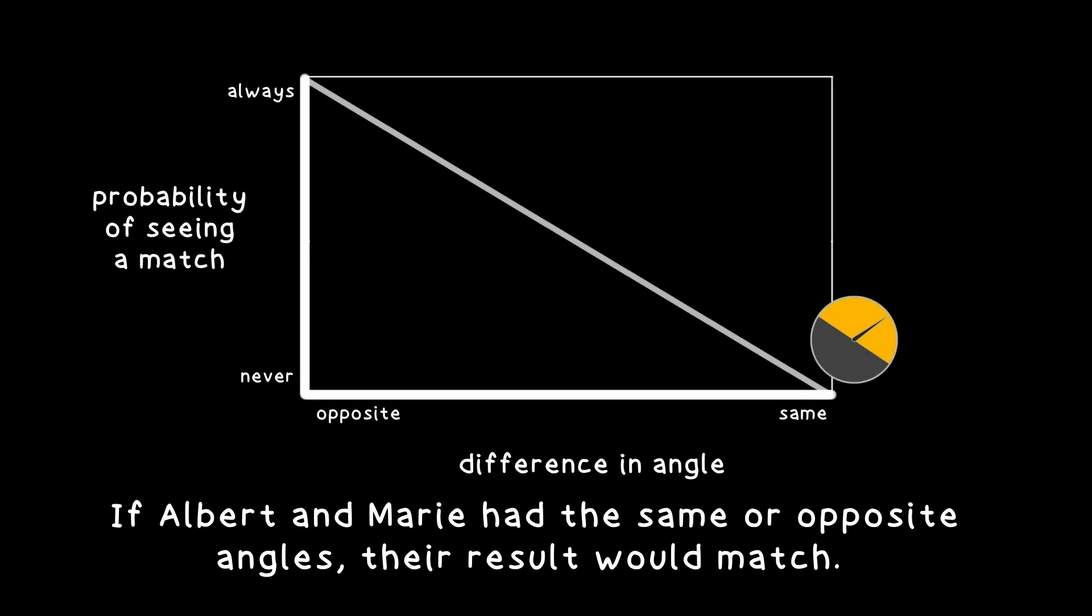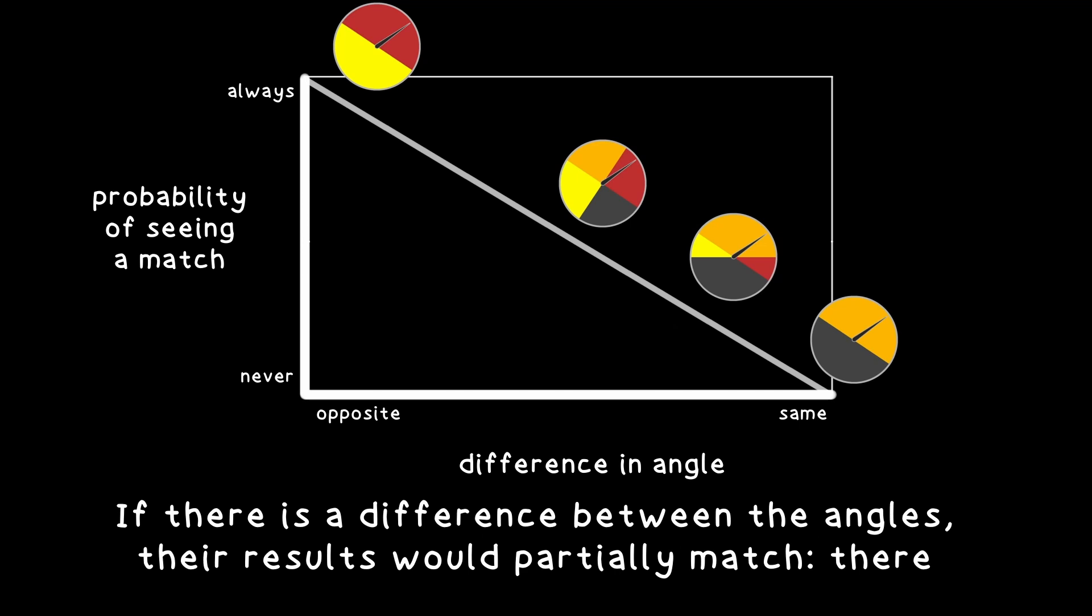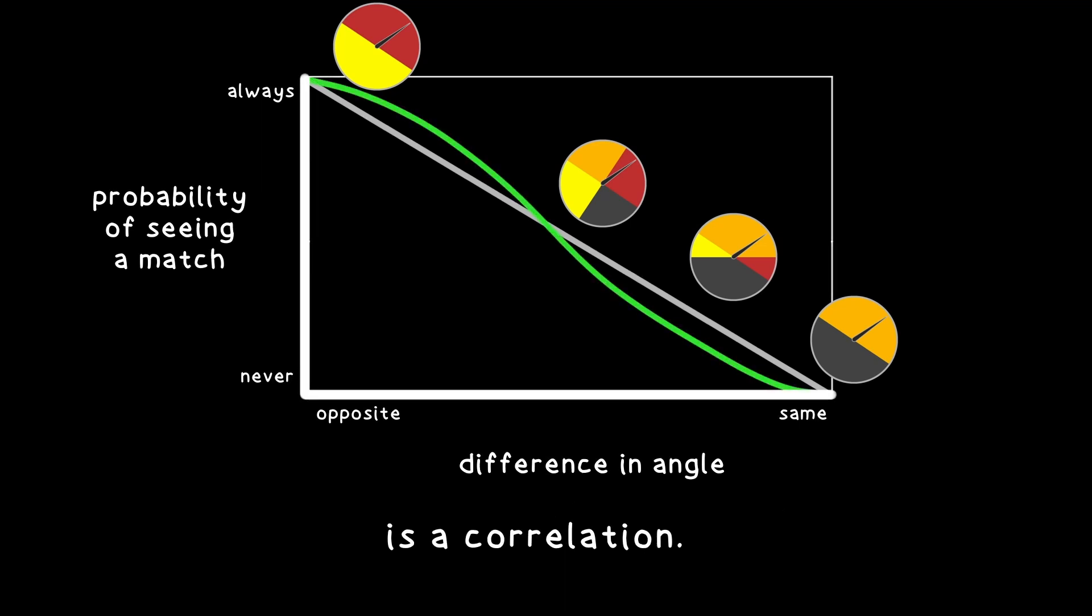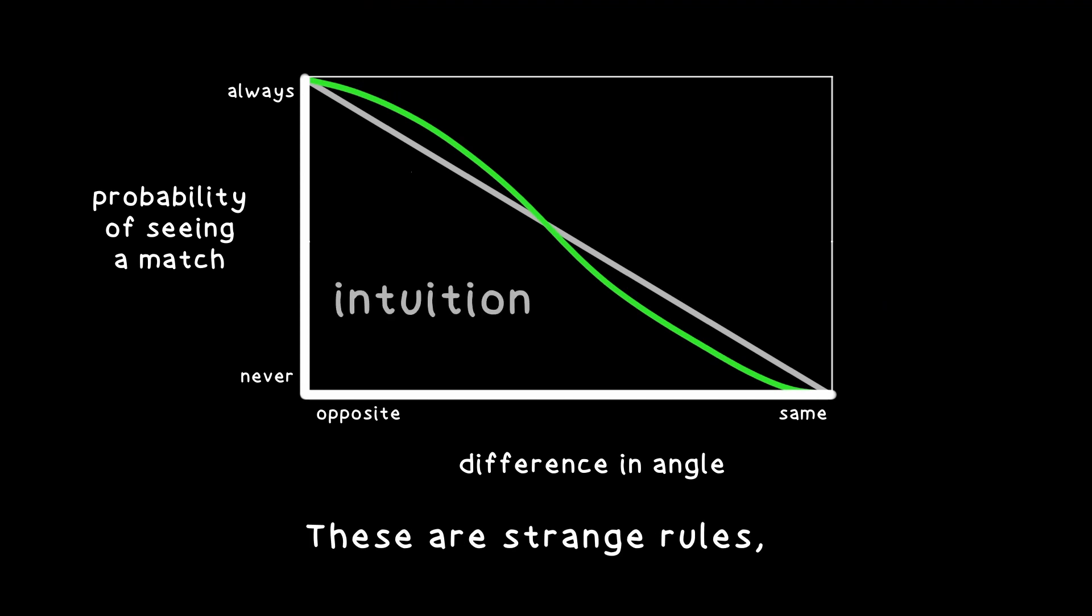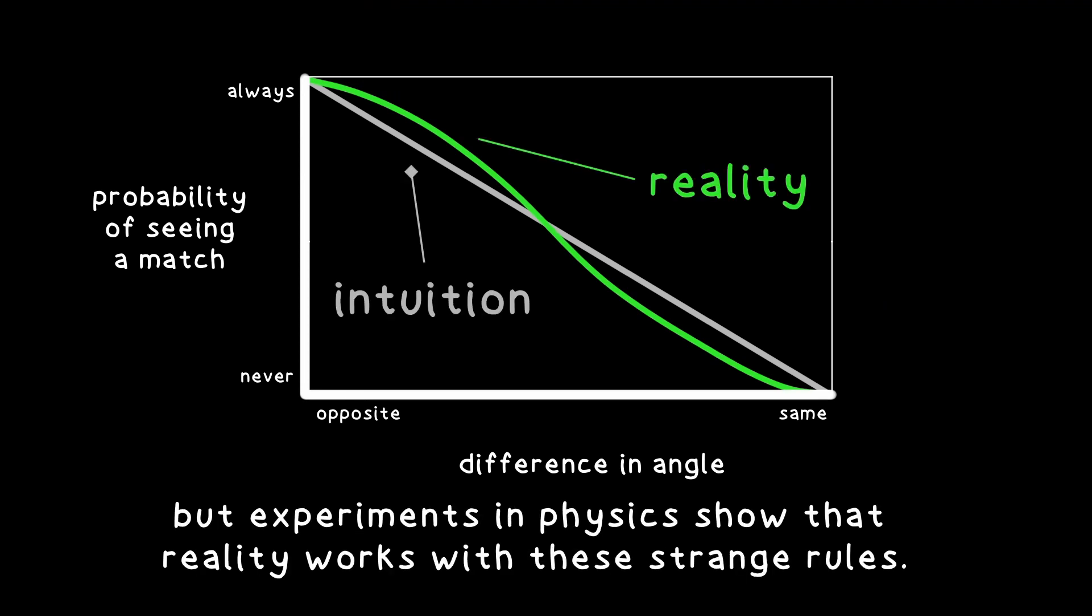If Albert and Marie had the same or opposite angles, the results would match and there would be no randomness. If there is a difference between the angles, the results would partially match. There is a correlation. These are strange rules, but experiments in physics show that reality works with the strange rules.